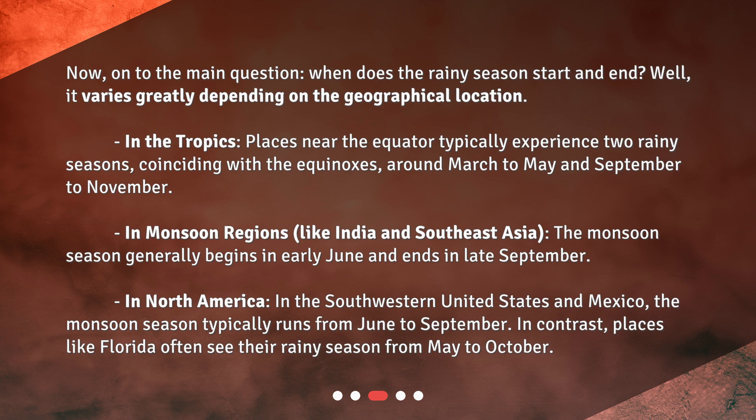In monsoon regions like India and Southeast Asia, the monsoon season generally begins in early June and ends in late September. In North America, in the southwestern United States and Mexico, the monsoon season typically runs from June to September. In contrast, places like Florida often see their rainy season from May to October.